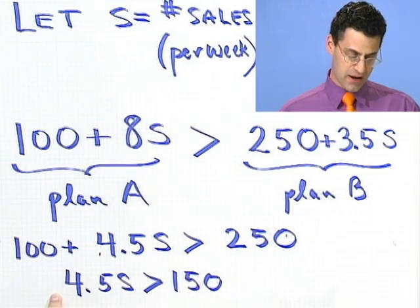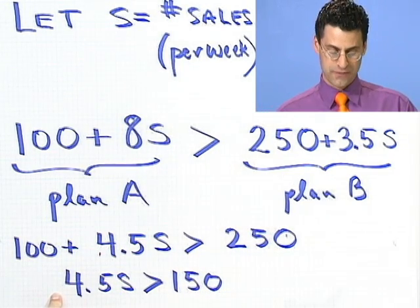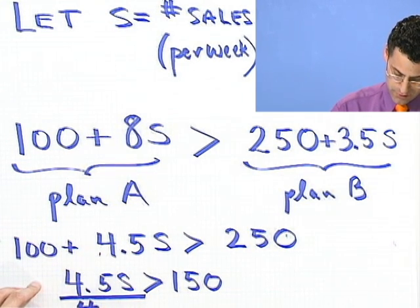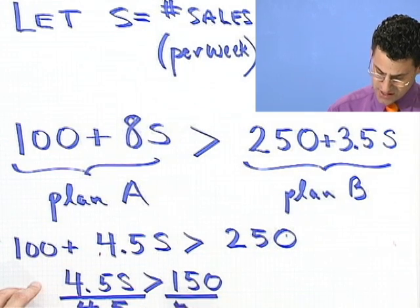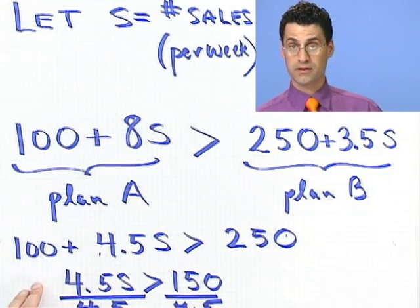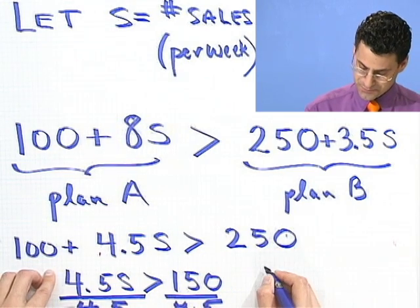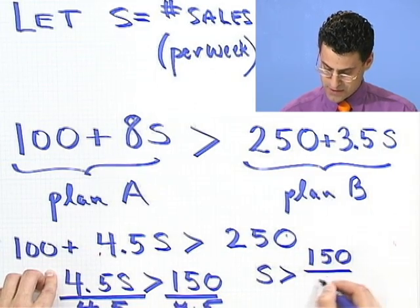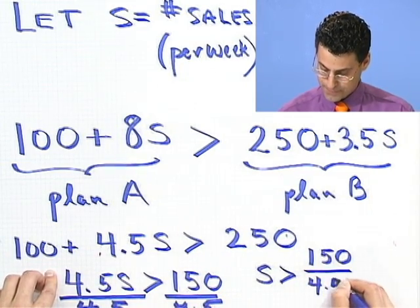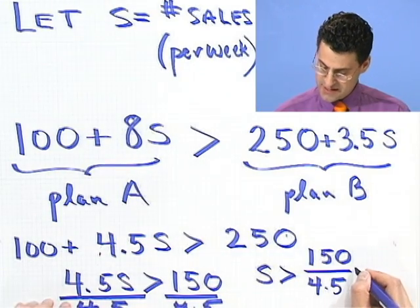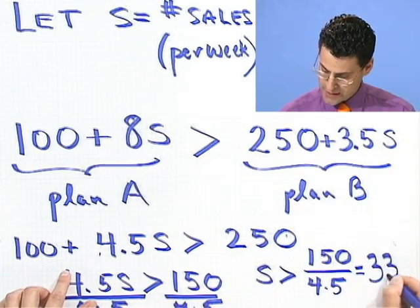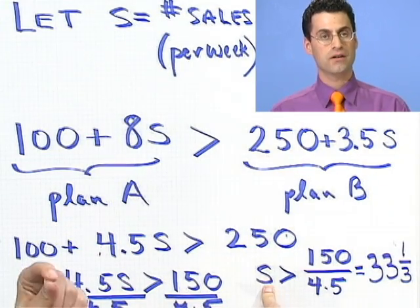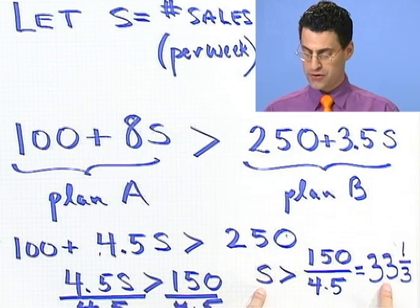To solve for S, I have to divide by 4.5. If I divide both sides by 4.5 — do I switch the inequality sign? Absolutely not, because 4.5 is positive. So what I see is S is greater than 150 divided by 4.5. If we plug that into a calculator, we see this is 33 and one-third. So S, which is the number of sales I make, has to exceed 33 and one-third.